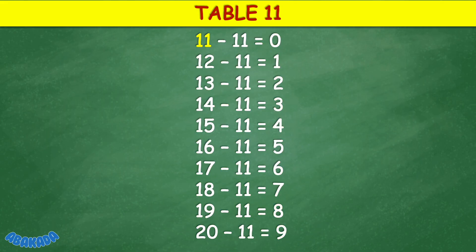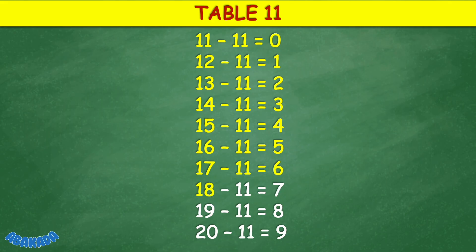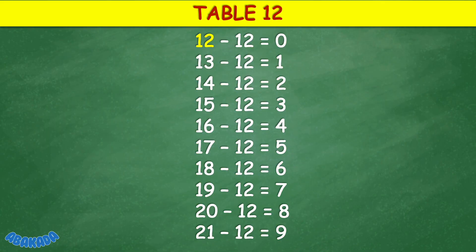Table 11: 11 minus 11 equals 0, 12 minus 11 equals 1, 13 minus 11 equals 2, 14 minus 11 equals 3, 15 minus 11 equals 4, 16 minus 11 equals 5, 17 minus 11 equals 6, 18 minus 11 equals 7, 19 minus 11 equals 8, 20 minus 11 equals 9.